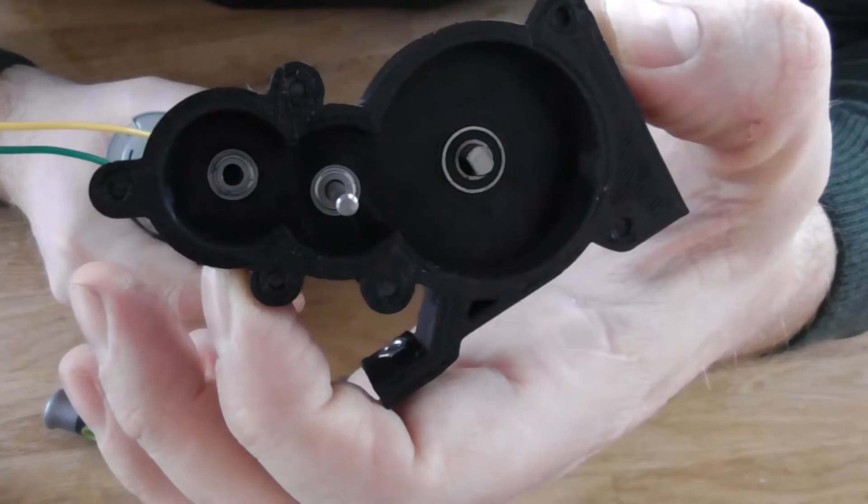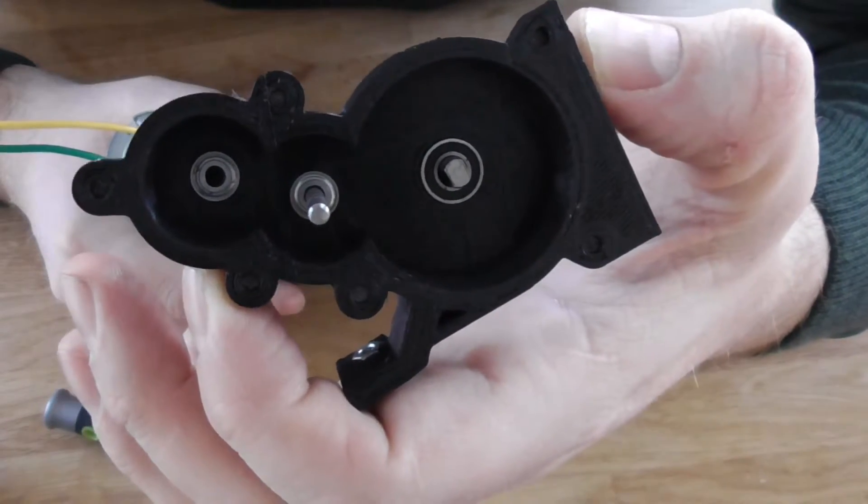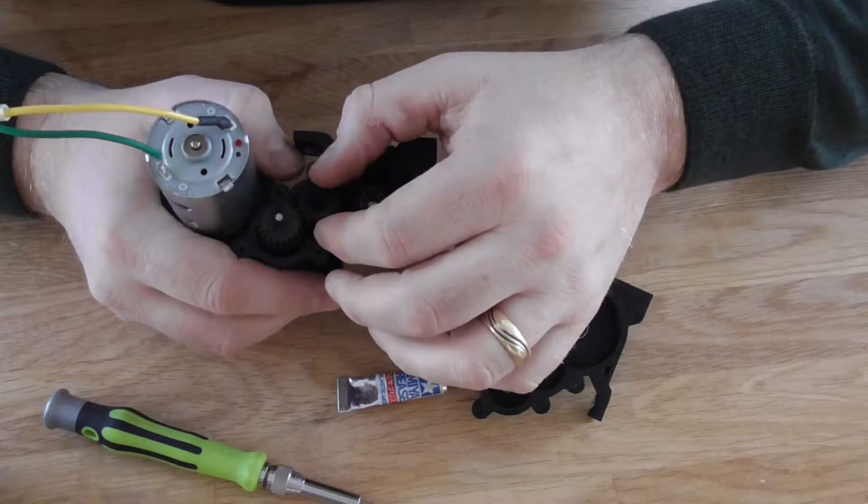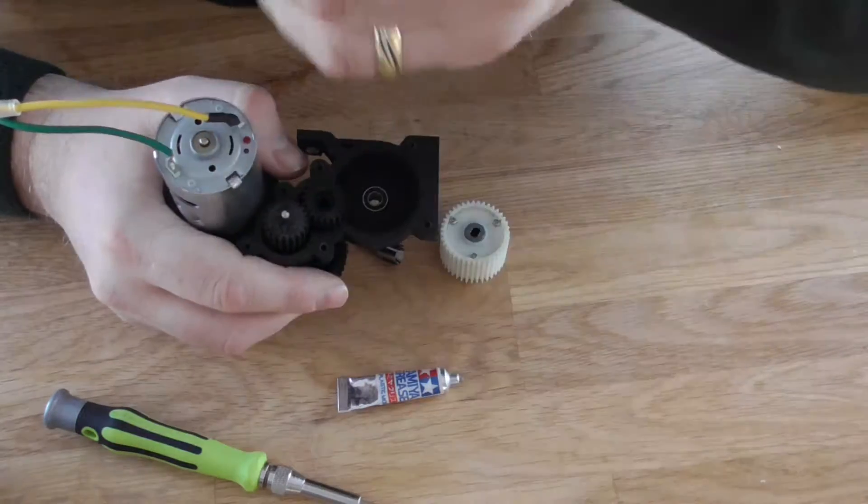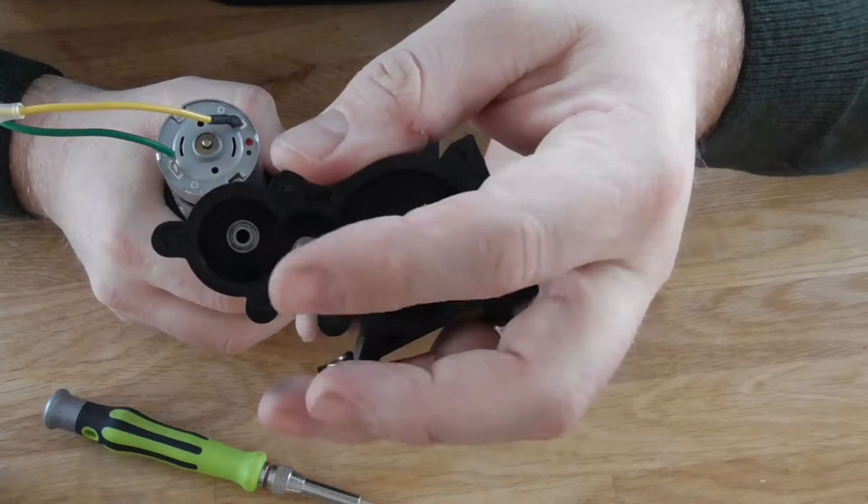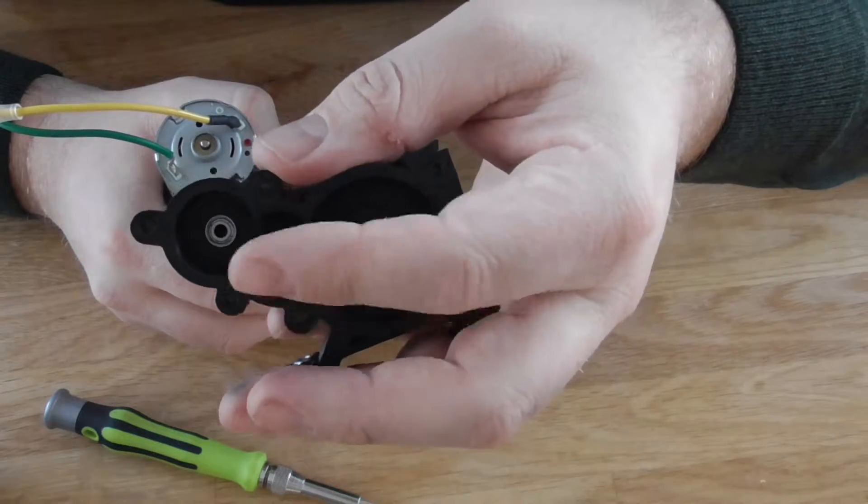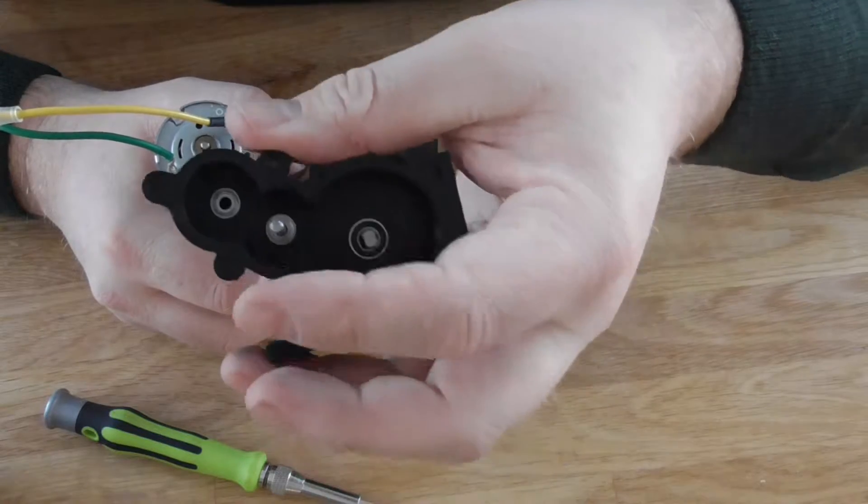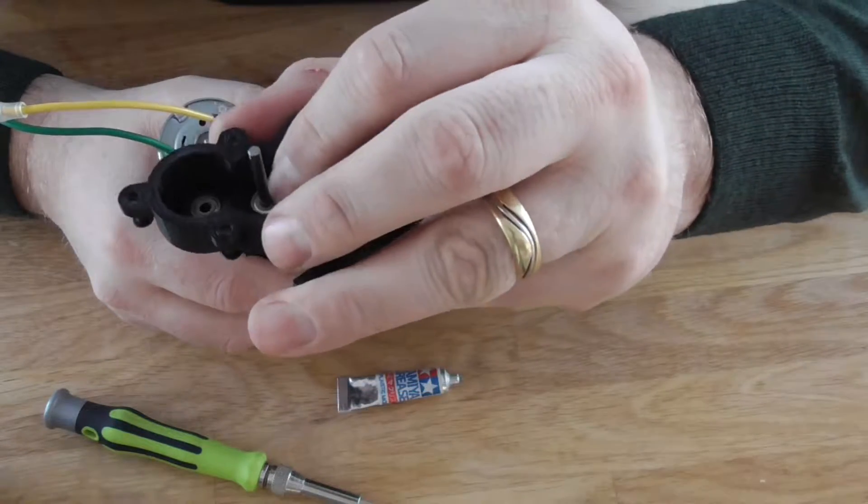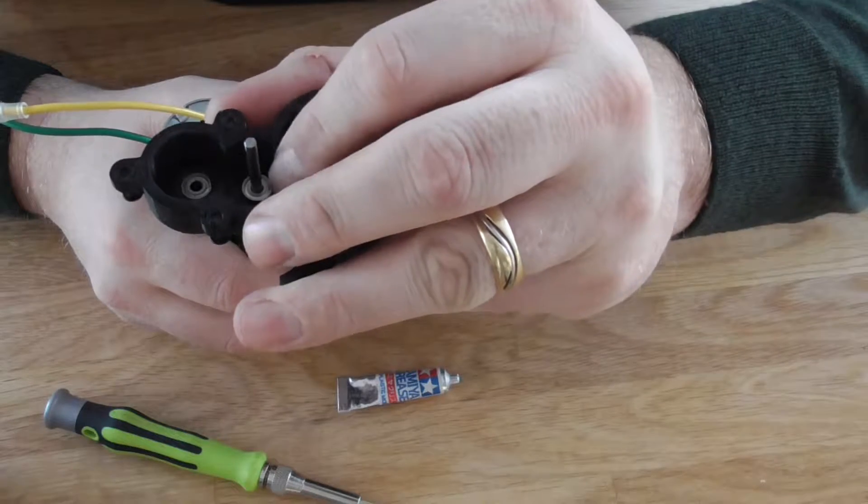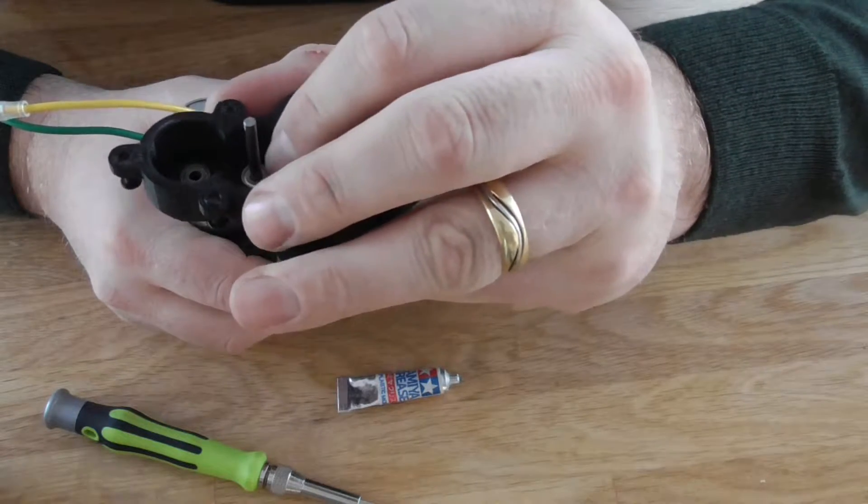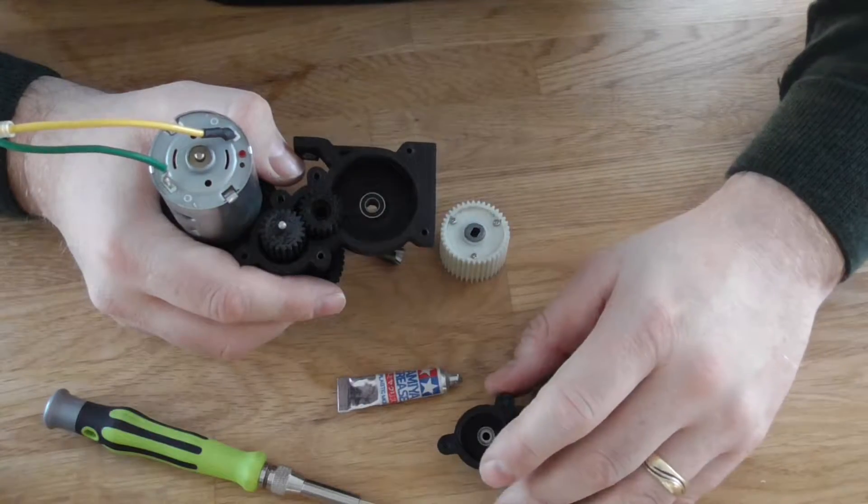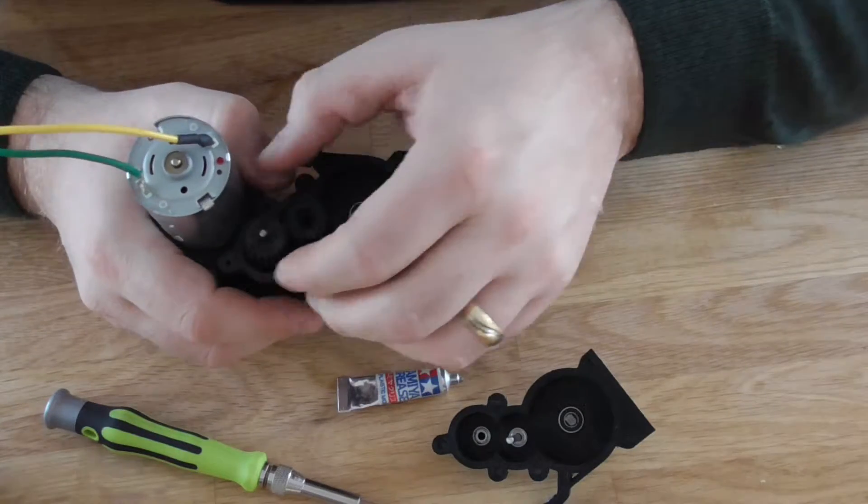And there you can see a nice good shot of the ball bearings. I am using ball bearings. I thought that a 3mm pin here would wear the plastic much more than the 8mm ball bearing, especially on the input here on the reduction side.